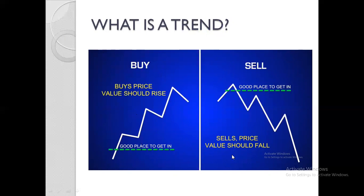Now let's look at a downtrend. In this situation the market is generally moving down — the exchange rate is dropping. It starts from this point, moves up, and then the next high we see is lower than the previous one. We have a series of lower highs and lower lows, and that helps us identify that the market is trending downward — so we are looking for sell opportunities.